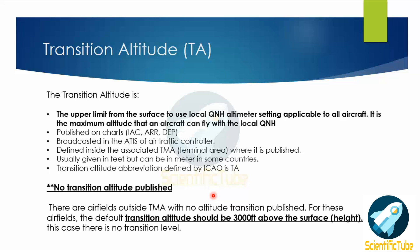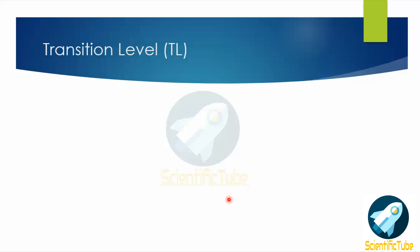Now let's talk about when there is no transition altitude published. There are airfields outside the TMA where no transition altitude is published. For these airfields, the default transition altitude should be 3,000 feet above the surface, denoted by height. In this case, there will be no transition level.